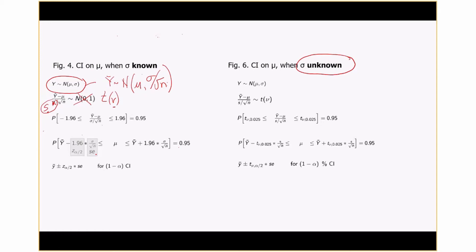That's the symbol that means nu. Because we're dealing with a t distribution, you don't know how to calculate the appropriate value of t until you know the number of degrees of freedom. Unlike the standard normal distribution, the t distribution has this other parameter, nu, which is the number of degrees of freedom.